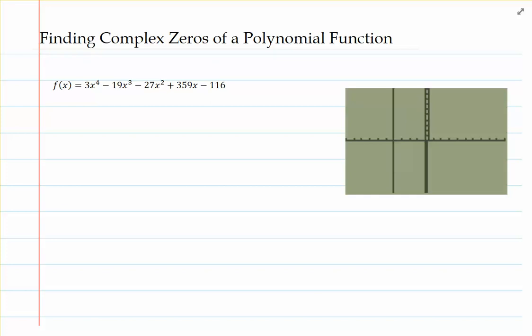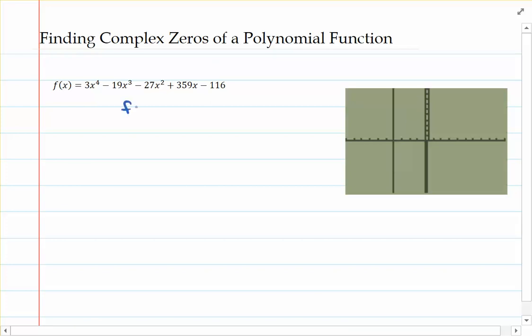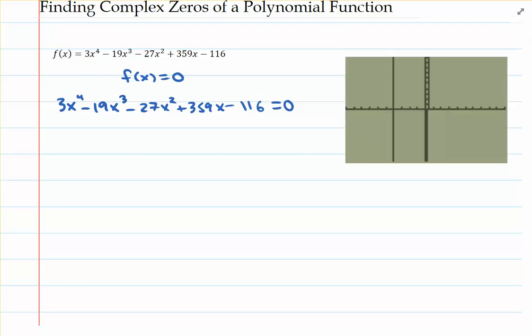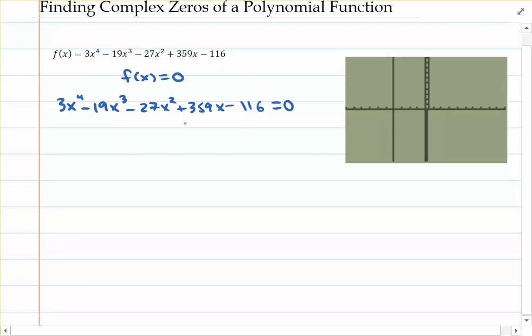Let's quickly remind ourselves what finding the zeros really means. We're trying to solve the equation f of x equals 0, which means we're trying to figure out all the values of x we could plug in to give us an output of 0. This polynomial has 5 terms involved with it, so any of the by-hand factoring techniques are going to fly out the window here, so we do have to jump to the rational zeros theorem.